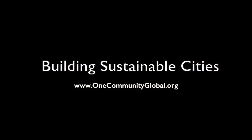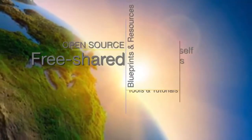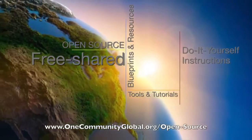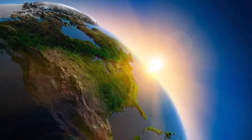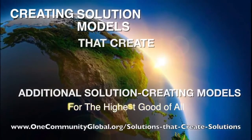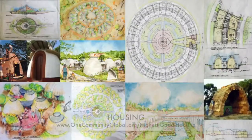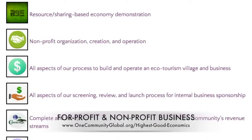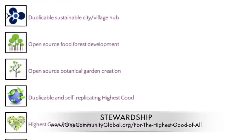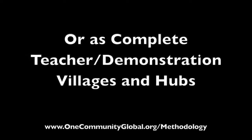Building Sustainable Cities: One Community Weekly Progress Update Number 206. One Community is a 501c3 non-profit organization creating open source and free shared blueprints, resources, tools, tutorials, and do-it-yourself instructions for highest good living — creating solution models that create additional solution-creating models in the service of all life on this planet. This includes highest good approaches to food, energy, housing, education, for-profit and non-profit business creation, society, and true earth stewardship. We are creating all these things to be implementable as either individual components or as complete teacher demonstration villages and hubs.